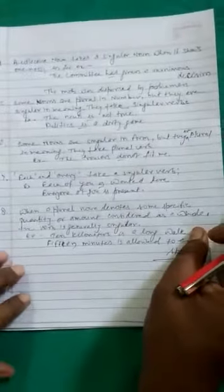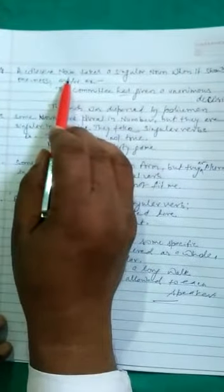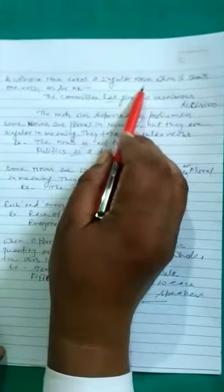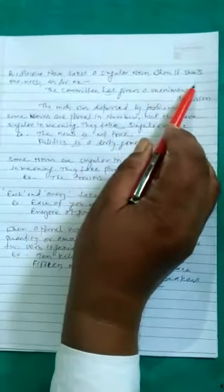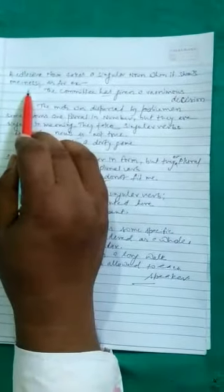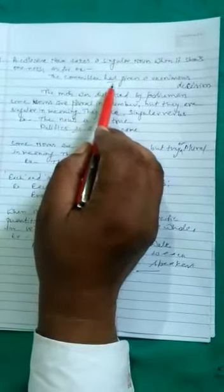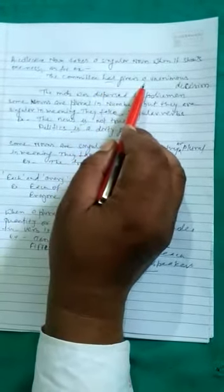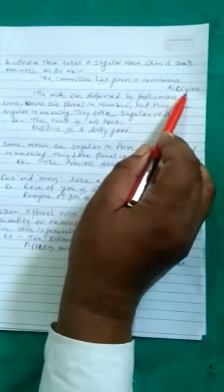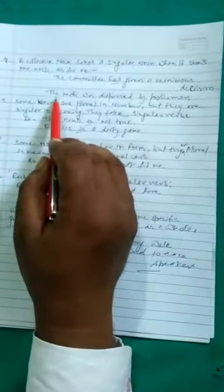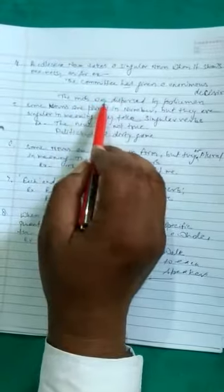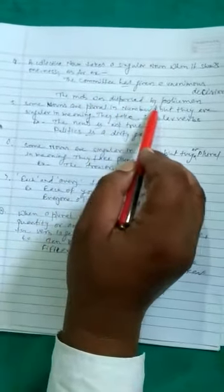A collective noun takes a singular verb when it shows oneness. As for example, the committee has given a unanimous decision. Another example, the mob was dispersed by policemen.